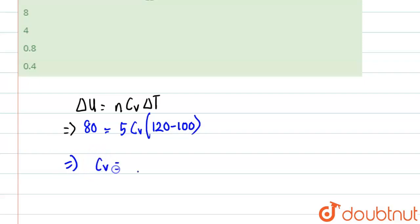So Cᵥ will come out to be 80 divided by 5 into 20. So 5 times 20 is basically 100, so we will find 80 divided by 100. This will come out to be 0.8, not 0.08. This is the required answer.